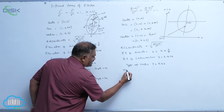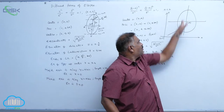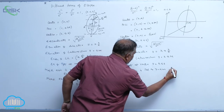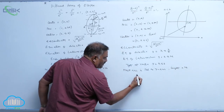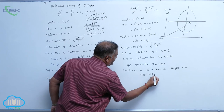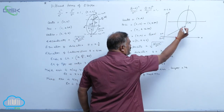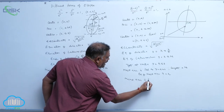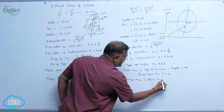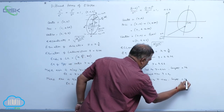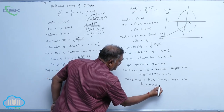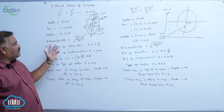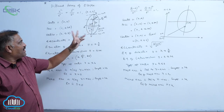Major axis is parallel to the y-axis, its length is 2b, and the equation of the major axis is x = h. Minor axis is parallel to the x-axis, its length is 2a, and its equation is y = k. So like this, we see the difference between the two different forms of the ellipse.